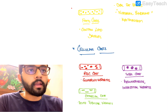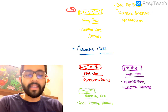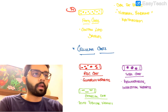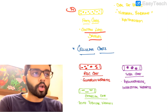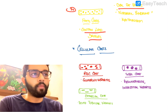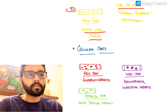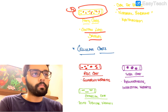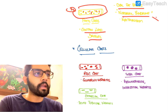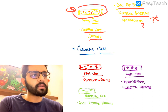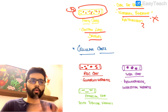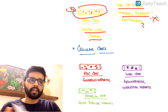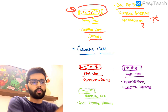Next are the fatty casts. These contain lipid droplets or oval fat bodies — you can see the oval fat bodies in the picture. Fatty casts are mainly seen in nephrotic syndrome, and sometimes in hypothyroidism. The key association to remember is: fatty cast equals nephrotic syndrome.